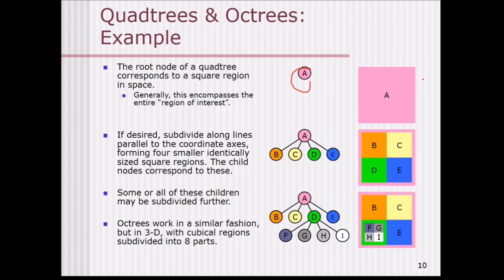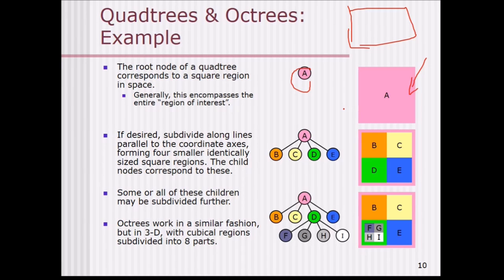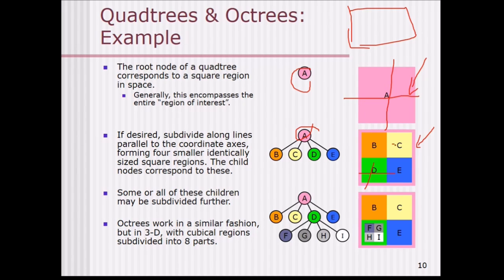The root node of a quad tree corresponds to a square region in space — shown here in pink. Generally this encompasses the entire region of interest, so if you have an image or DEM you take this as the total region. If desired, we subdivide along lines parallel to the coordinate axes, forming 4 smaller identically sized square regions. Some or all of these children may be subdivided again.